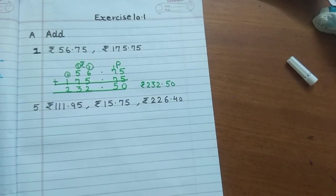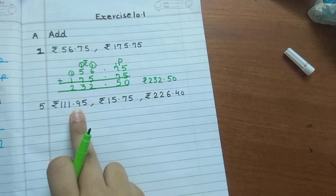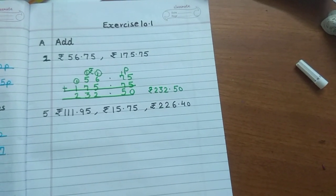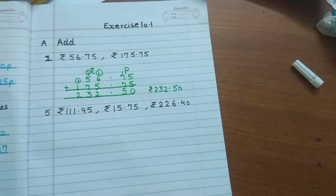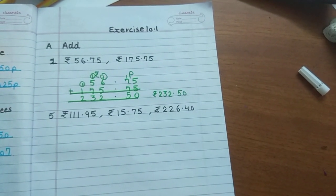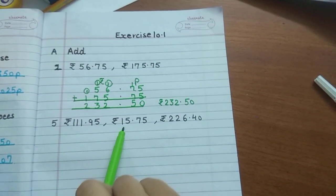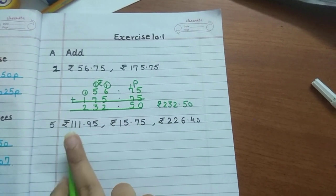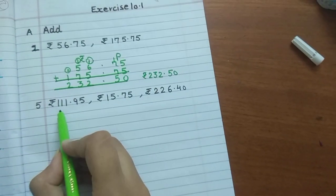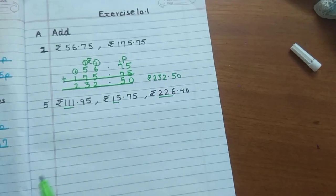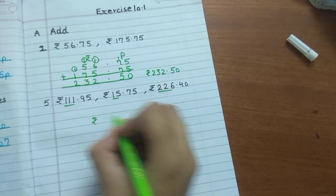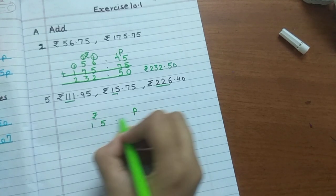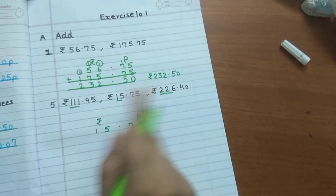Next question. We have 3 amounts: 111 rupees 95 paise, 15 rupees 75 paise, 226 rupees 40 paise. We have to keep in mind that when we arrange them in columns, we should take smallest first, then bigger, then biggest amount. So which is the biggest? Ignoring paise for now, looking at rupees: 111, 15, 226. Which is the least? The smallest is 15, right?